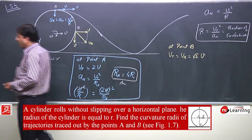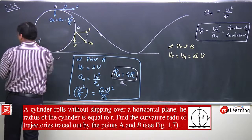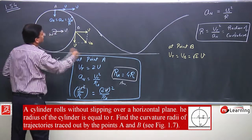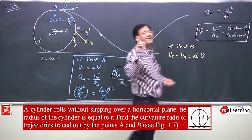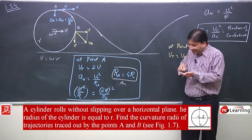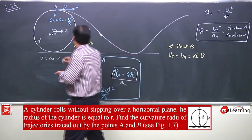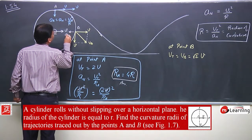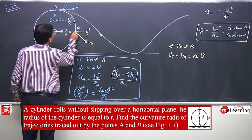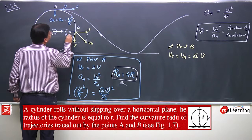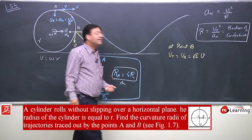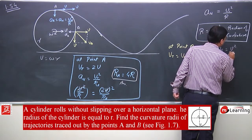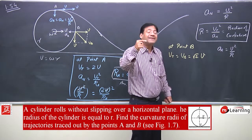Now for the normal acceleration at point B: the acceleration of point B is directed toward the center — this is the radial acceleration. We know this radial acceleration well; its magnitude is v squared by r and it is directed toward the center.